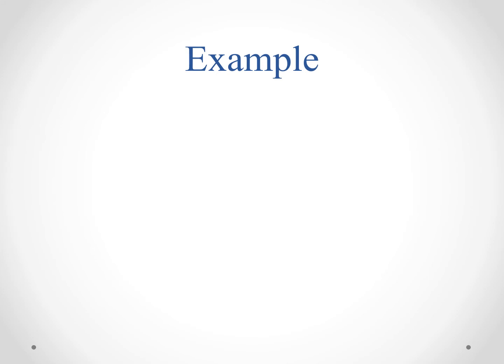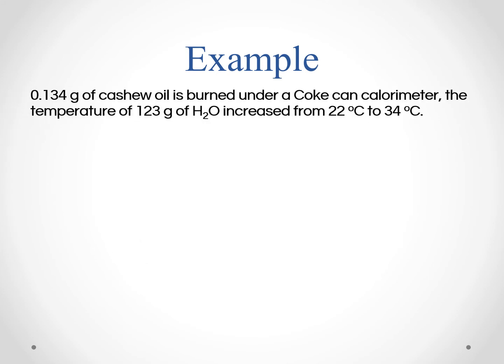So here's an example problem based on what we're going to do in lab. If we burn 0.134 grams of cashew oil under our Coke can calorimeter, the temperature increased from 22 degrees Celsius to 34 degrees Celsius, and our mass of water in the can was 123 grams.